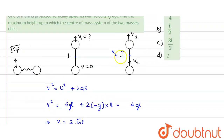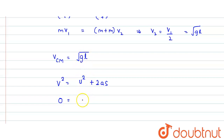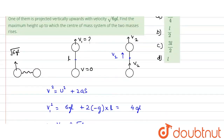Now from the position where the string becomes taut, how much further can the center of mass rise? It rises until the final velocity becomes zero. We apply v² = u² + 2as: 0 = gl + 2(−g)(h), so h = gl / 2g = l/2. The center of mass rises an additional l/2 from this position.